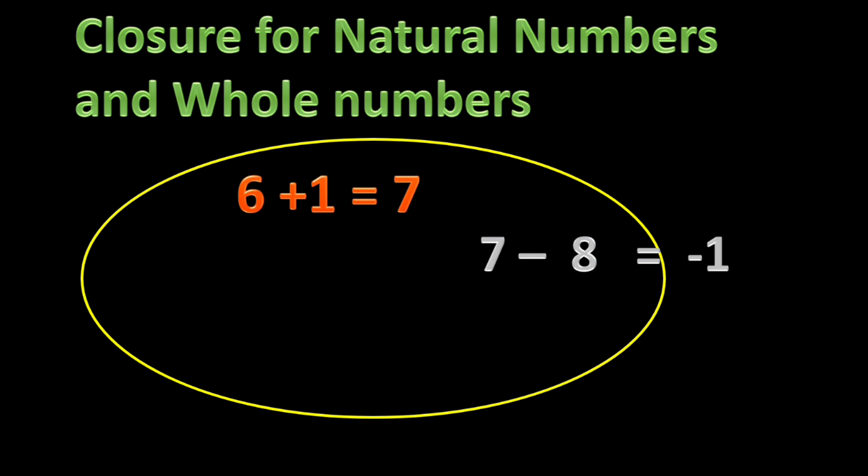Now for subtraction: if we are subtracting two whole numbers, here 8 is subtracted from 7, the resulting number is negative 1, and negative 1 does not belong to the whole number set. So subtraction is not closed — natural numbers and whole numbers are not closed under subtraction. For multiplication, when we multiply any two whole numbers, we always get a whole number as the product, so multiplication is also closed.